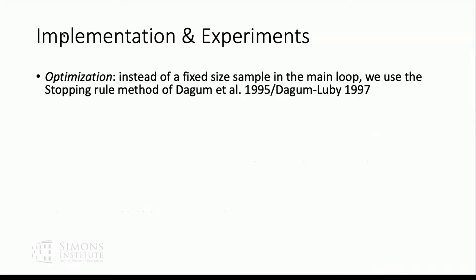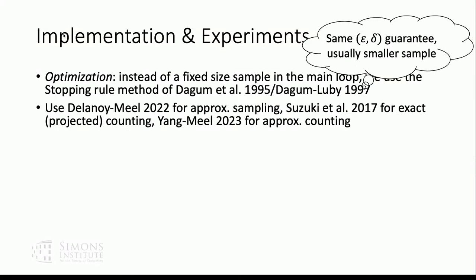So onward to implementation experiments. There's an important optimization. Rather than just taking a fixed size sample that you would get from the Chernoff bound, there was an algorithm from Dagum et al. that adaptively chooses a number of samples. And it's giving us the same guarantee as if we had used a Chernoff bound with a fixed size sample. But you're using fewer runs of that approximate model counting oracle, sampling model counting. And, of course, that's really important in practice. So that's not our work. Anyway, we use it. And then we use some recent state-of-the-art systems for the various components.